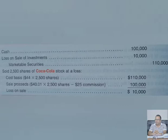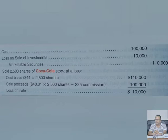We sold for $100,000 net proceeds, but we purchased 2,500 shares at $44, totaling $110,000 cost. Subtracting the $25 brokerage charges, net cash is $100,000. Since we purchased for $110,000 and sold for $100,000, we have a $10,000 loss. Entry: Cash debit; Loss on Sale of Investment debit $10,000; Marketable Securities credit $110,000.